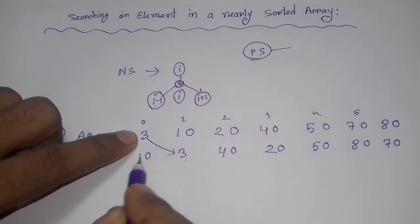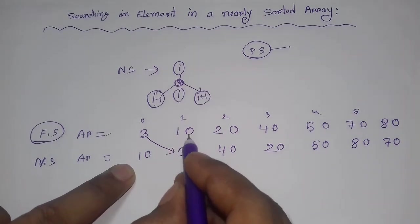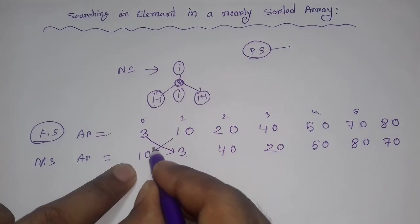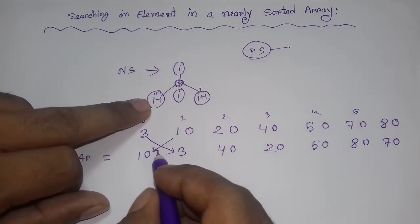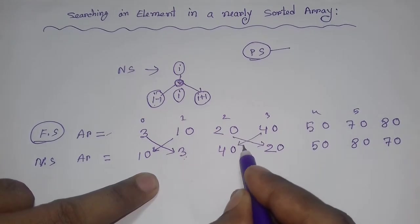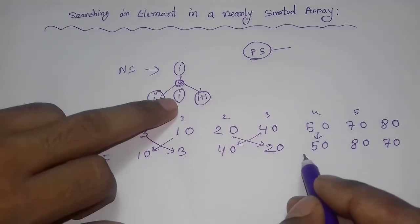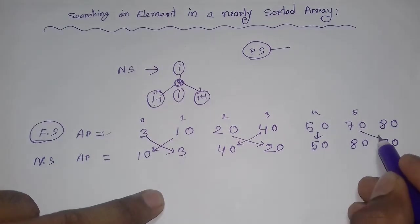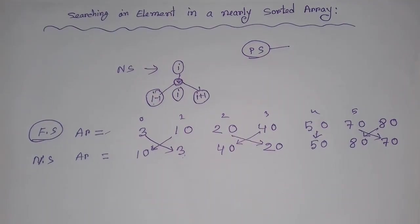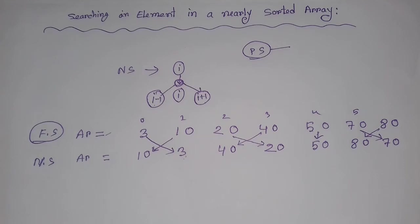Consider the array: 10, 3, 40, 20, 50, 80, 70. Notice that 10 is at index 0 but belongs at index 1; 3 is at index 1 but belongs at index 0. Each element is at most one position away. So this is a nearly sorted array.